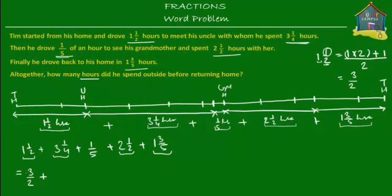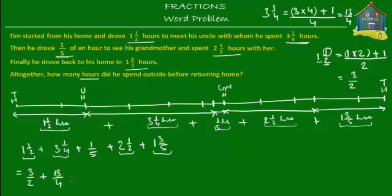If it's not very clear why we're doing this, please go watch the concept video on converting mixed numbers to improper fractions. Now, three and a quarter: you multiply three by the denominator four, then add the numerator one, and put everything over four. Three times four is twelve, plus one is thirteen — so three and a quarter equals thirteen over four. Nothing needs to be done to one-fifth because it's already a proper fraction. Then two and a half: two times two is four, plus one is five, over two — so five over two. And one and three-fifths: one times five is five, plus three is eight, over five — so eight over five.